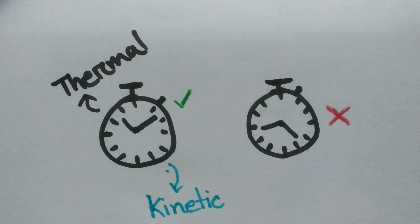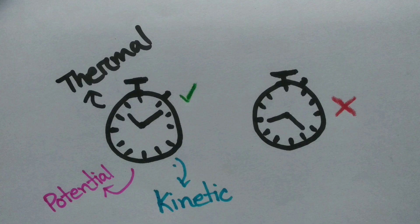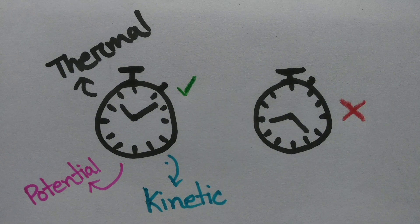Friction increases the thermal energy. Internally, of course, it also has some potential energy because of springs. Now, according to Einstein, this one has greater mass than this.